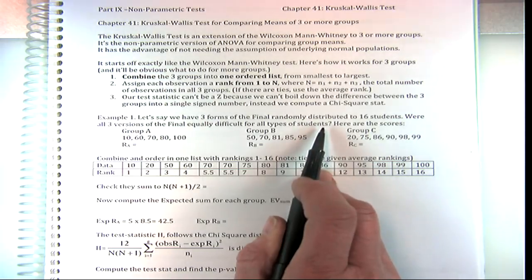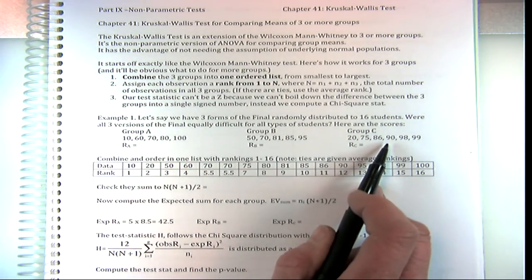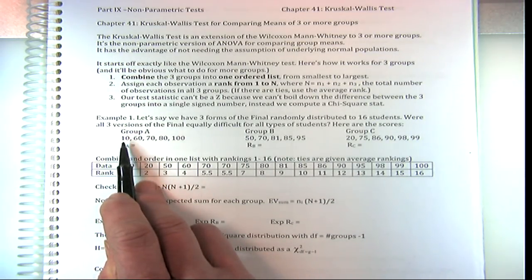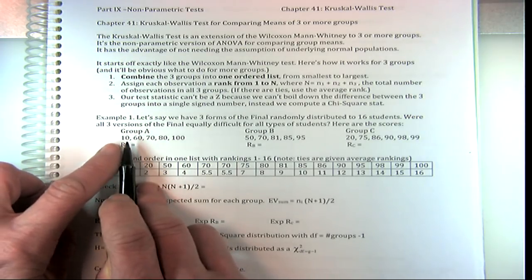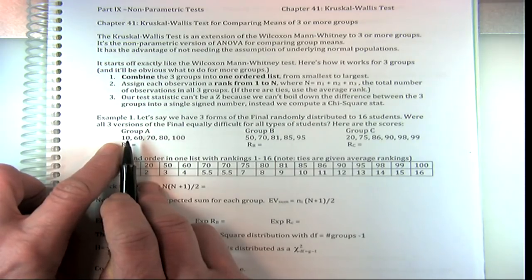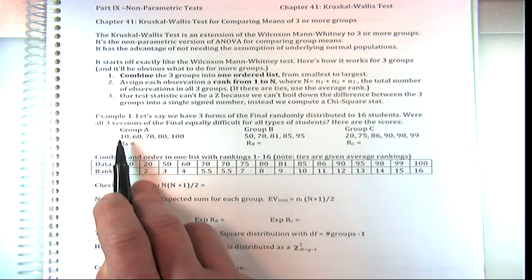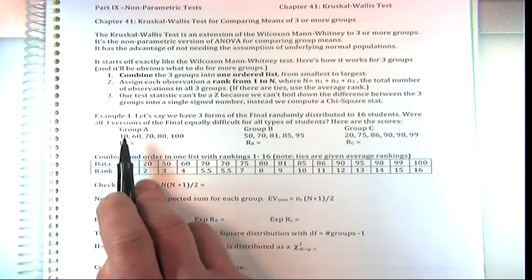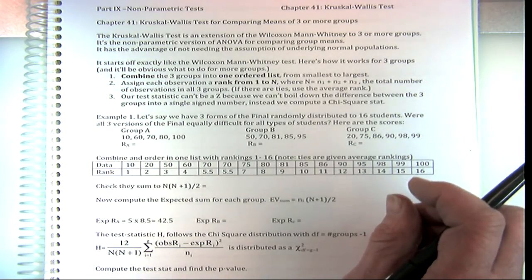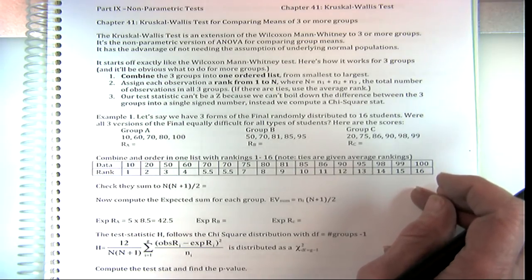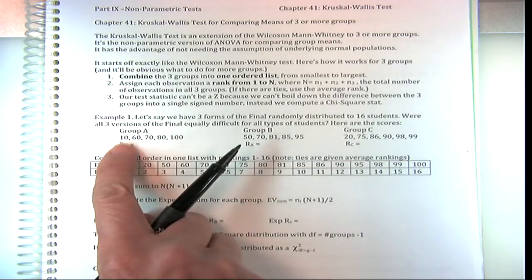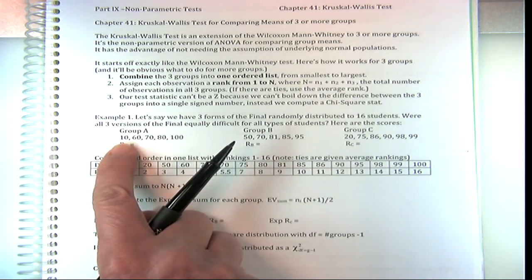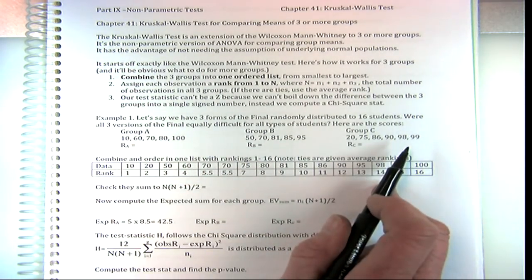Let's say we have three forms of a final randomly distributed to 16 students — we want to see if they're all equivalent. Group A has this 10 in it, and that almost-impossible score would give a significant F statistic if we used ANOVA, making it look like that exam is different when it's not. So for sure in this case we want to change to rankings, because we don't want to give that outlier student so much weight. That often happens when people take it early — they just weren't prepared.